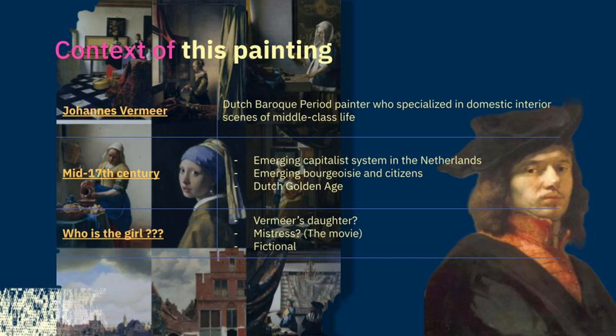In the mid-17th century, under the emerging capitalist system in the Netherlands, society gave people more democracy and freedom, like spring rain reviving the earth and awakening all things. This also allowed art to shed the shackles of religion and the court, becoming more widely oriented toward secular life. This change prompted large quantities of oil paintings to establish a monument for the middle class and beautify their living environment.